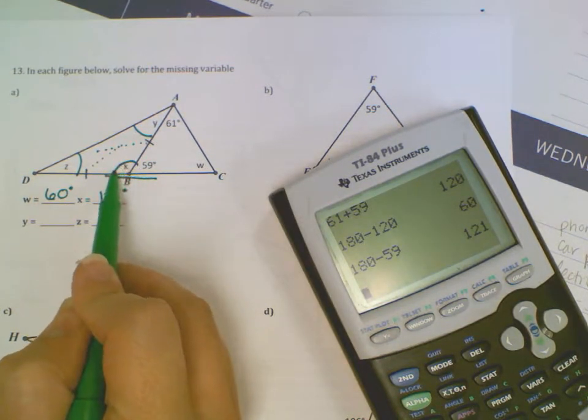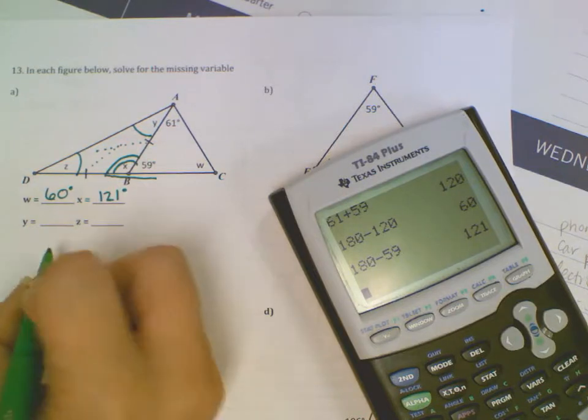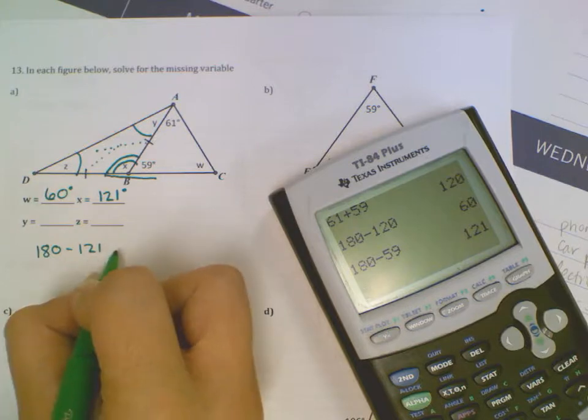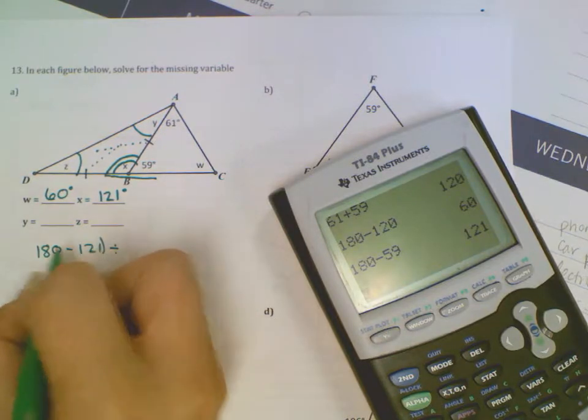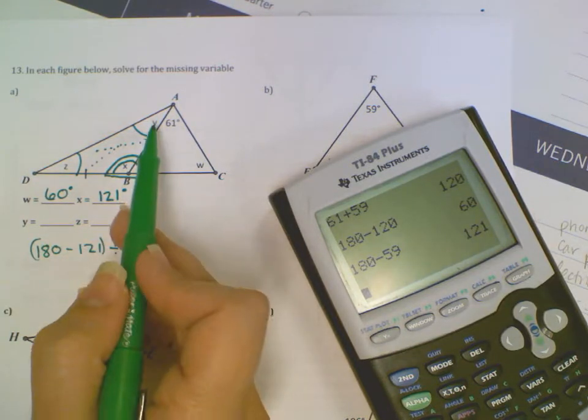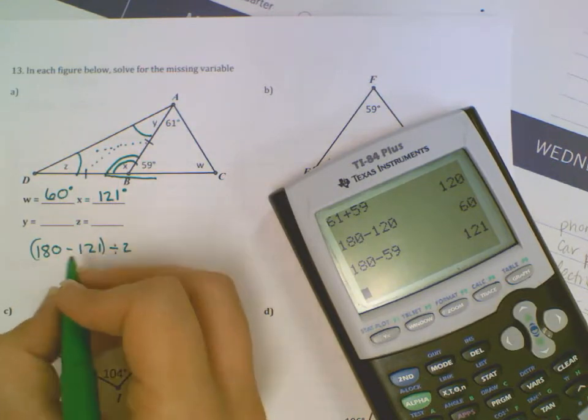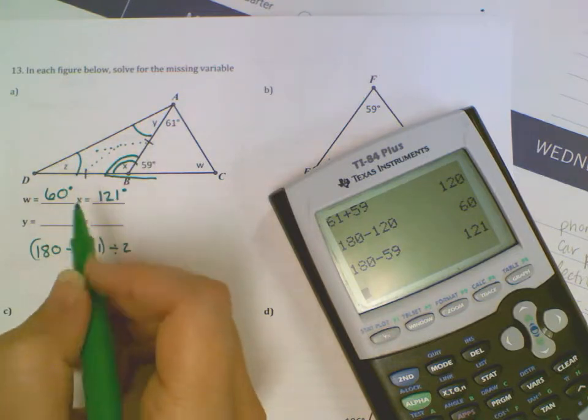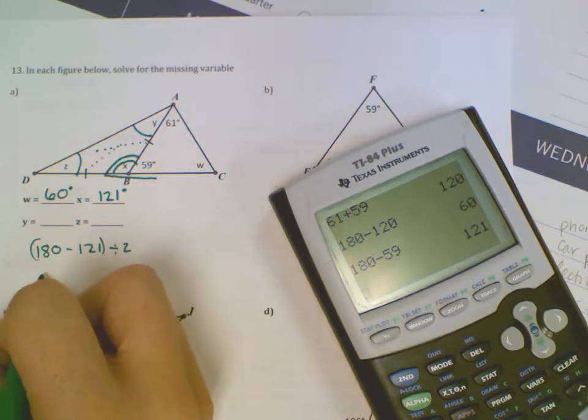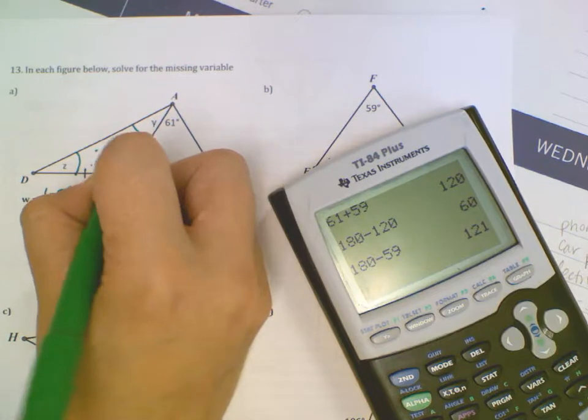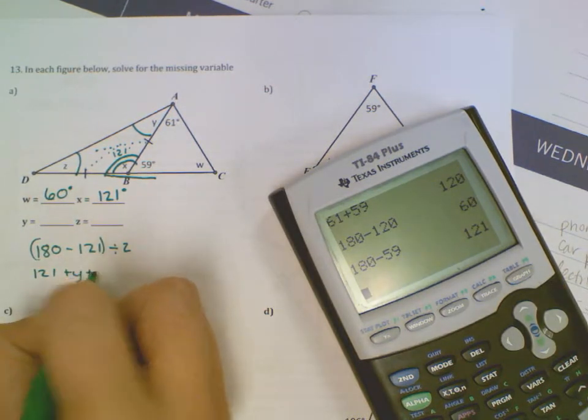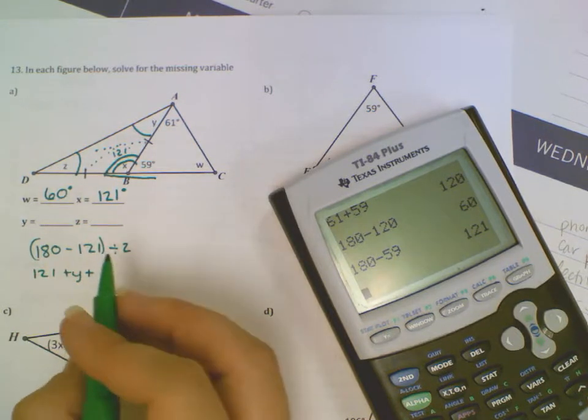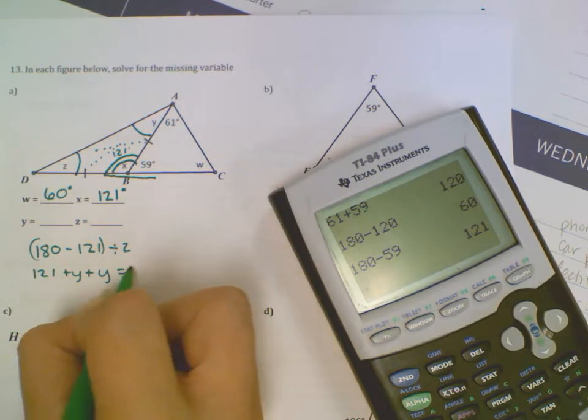Now, if this is 121 degrees, I can do 180 minus 121 and then divide that by 2, so that I can distribute that between those two angles. Or you can say, well, Y and Z are the same, so I'll call both of them Y. And you can say if this is 121, 121 plus Y, plus, if this is Y and this is Z, but they're both having the same measure, I can say they're both Y. Equals 180.